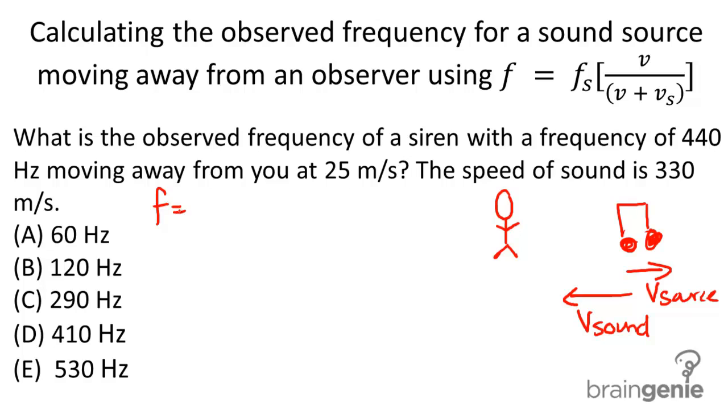So let's go ahead and write down our equation here. The frequency is going to be equal to the frequency of the source, and then we have this ratio of the speeds of sound and the speed of the source.